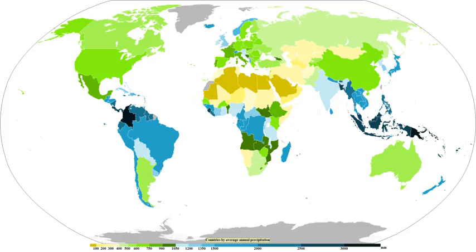Precipitation is a major component of the water cycle, and is responsible for depositing the fresh water on the planet. Approximately 505,000 cubic kilometers (121,000 cu mi) of water falls as precipitation each year, 398,000 cubic kilometers (95,000 cu mi) of it over the oceans and 107,000 cubic kilometers (26,000 cu mi) over land. The globally averaged annual precipitation is 990 millimeters (39 in), but over land it is only 715 millimeters (28.1 in). Climate classification systems such as the Köppen climate classification use average annual rainfall to help differentiate between differing climate regimes. Precipitation may also occur on other celestial bodies; when it gets cold, Mars has precipitation which most likely takes the form of frost, rather than rain or snow.